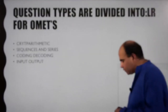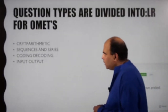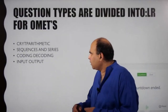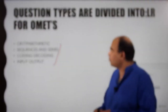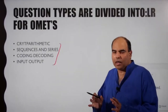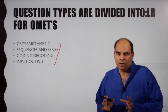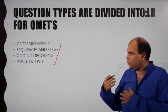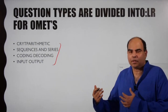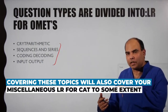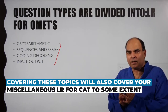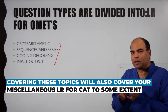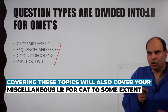By the way, in my book LR4 CAT, you also have statement course of action, which I have not written there. Then you've got crypt arithmetic, sequence series, coding decoding, and input-output — these are LR4 OMIT chapters. The advantage of doing these chapters is that it also covers, to some extent at least, your miscellaneous LR for CAT.